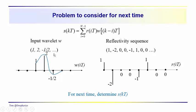In a more complicated situation we'd be hanging this wavelet from each of the reflection coefficients, scaling it by the amplitude of the reflection coefficient, and then summing them together. When the spacing between reflection coefficients is less than the duration of the wavelet, we get superposition — the wavelet reflected from one reflection coefficient overlaps with that reflected from another. For next time, see if you can figure out what the output will be when you convolve this seismic wavelet with this reflectivity sequence.